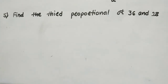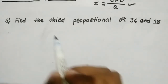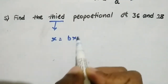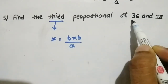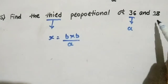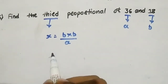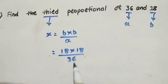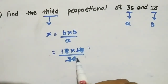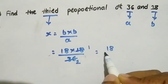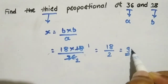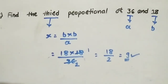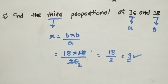Example number five: find the third proportional of 36 and 18. Using the formula x equals b times b divided by a, where first number is 36 and last number is 18. So x equals 18 times 18 divided by 36. Eighteen twos are 36, so 18 divided by 2 equals 9. The answer is 9 — very easy!